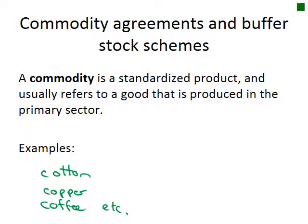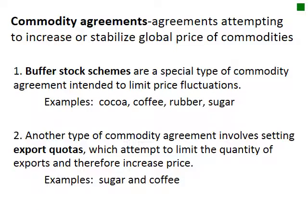Commodity agreements and buffer stock schemes: a commodity is a standardized product usually from the primary sector — examples include cotton, copper, coffee, etc. Commodity agreements attempt to increase or stabilize the global price of commodities. Buffer stock schemes are a special type of commodity agreement intended to limit price fluctuations — examples include cocoa, coffee, rubber, and sugar. Another type of commodity agreement involves setting export quotas to limit export quantities and therefore increase price, with examples including sugar and coffee.